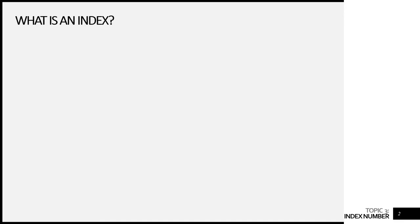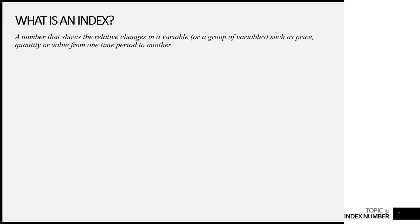Let's begin with what is an index. An index is a number that shows the relative changes in a variable or a group of variables — for example, prices, quantities, or any values between two time periods. Sometimes we call the index an index number.